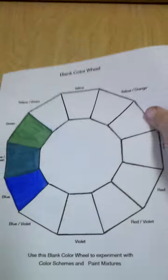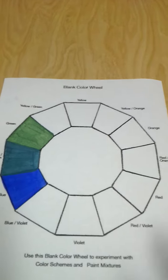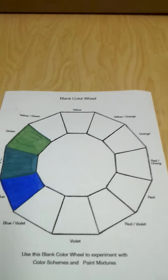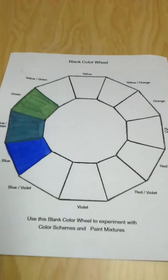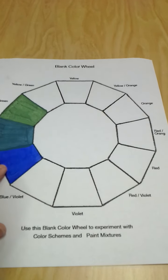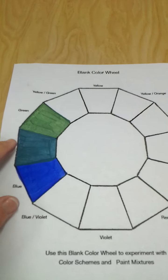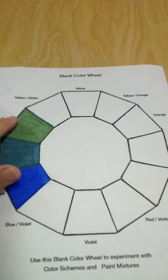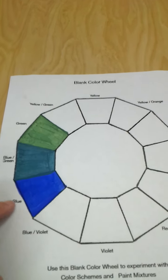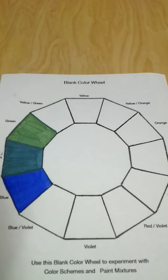Looking at the color wheel, I have painted in analogous colors. Right here you can see blue, blue-green, and green — these are all considered analogous colors because there are three colors in a group on the same side of the color wheel.